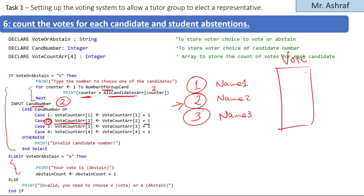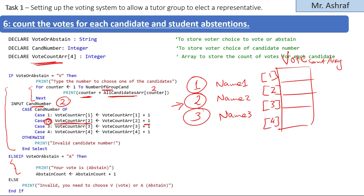We declare a 'vote_count' array up at the top, which holds four places for a maximum of four candidates. For example, if the user selected candidate two and that candidate previously had five votes, we increment by one, making it six. At the end, the array might look something like: seven, six, nineteen, and zero votes for each respective candidate.